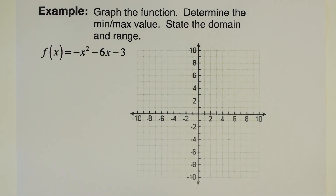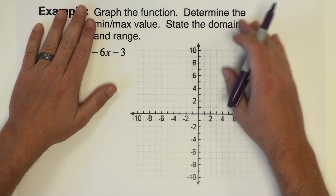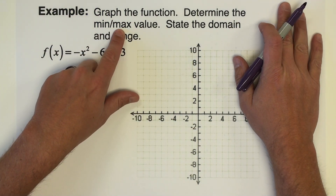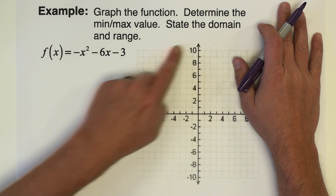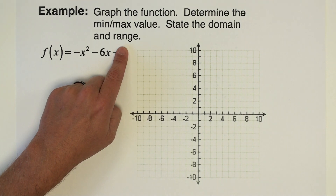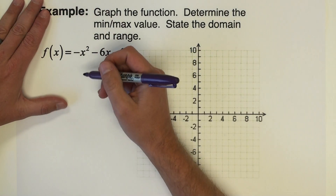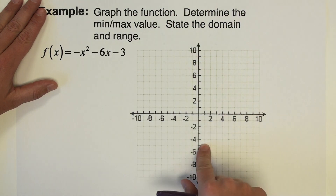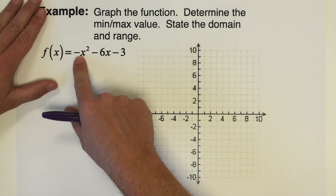Next example — the directions are a little bit different here. We are still graphing the function, but we're also asked to determine the minimum or maximum value, and to state the domain and range. Domain and range is something we've talked about previously in this course. Let's begin with the graph of the function, which means finding the vertex and knowing which direction it opens.